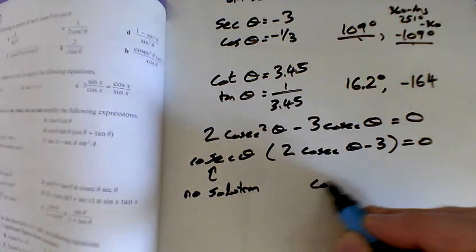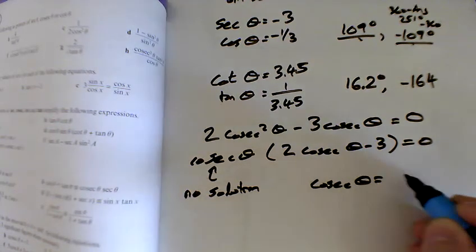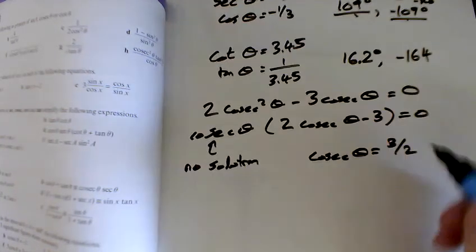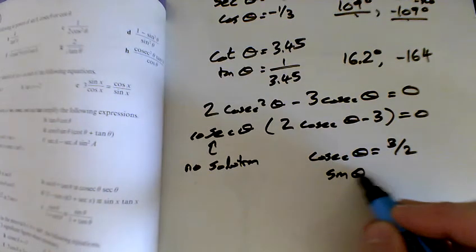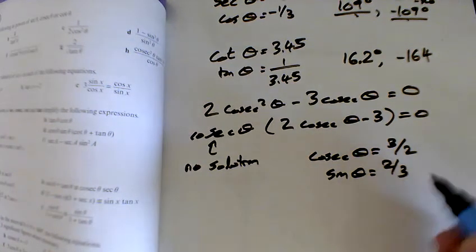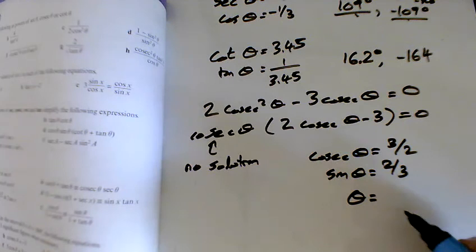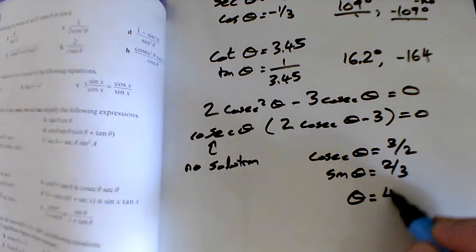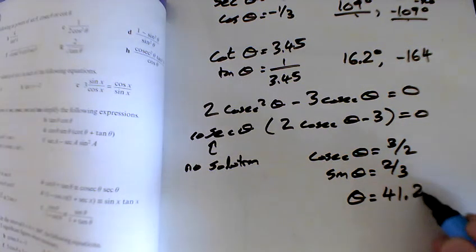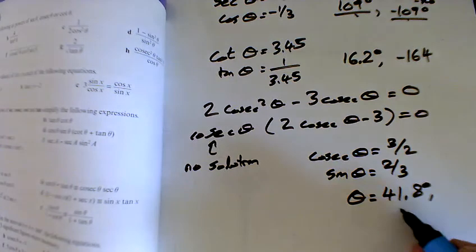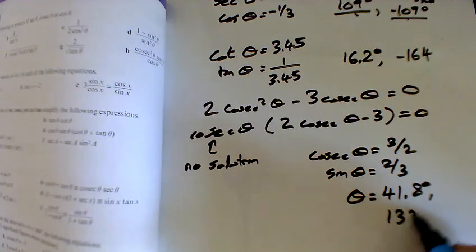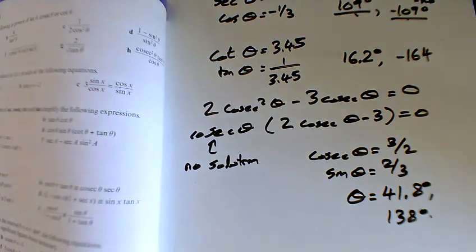Or, this one here, cosec theta equals 3 over 2. That gives you sine of theta is 2 thirds, and the inverse sine of 2 thirds is 41.8, and 180 minus that is 138 degrees. I'll stop there.